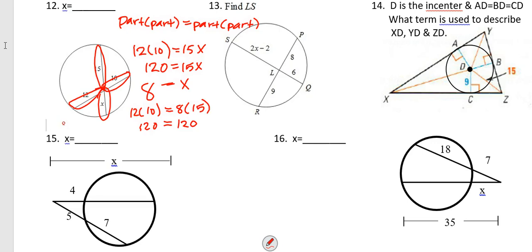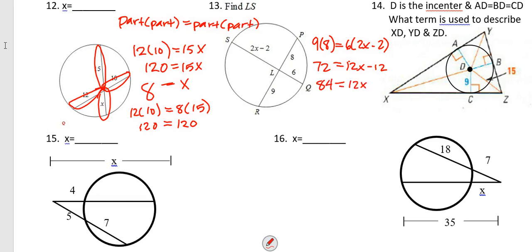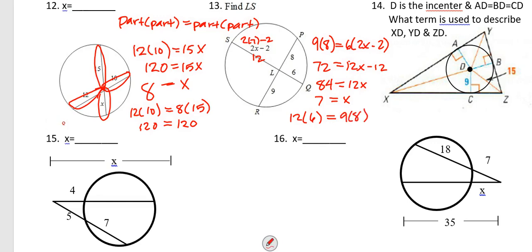For number 13, same formula: 9 times 8 = 6 times (2x − 2). That gives 72 = 12x − 12. Add 12 to both sides: 84 = 12x, so x = 7. Checking: 2 times 7 minus 2 is 12, so 12 times 6 = 72, and 9 times 8 = 72. So 72 equals 72 — correct.